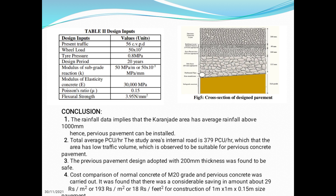These were the design inputs recorded during the case study, along with a typical cross section of the designed pavement. Conclusions from the case study: the rainfall data implies that Karanjade area has average rainfall above 1000 mm, hence pervious pavement can be installed. The study area's internal road had 379 PCU per hour, indicating low traffic volume suitable for pervious concrete pavement. The pervious pavement design adopted with 200 mm thickness was found to be safe. A cost comparison of normal M20 grade concrete and pervious concrete found a saving of approximately 29 rupees per meter square, 139 rupees per meter square, or 18 rupees per feet square for a 1m x 1m x 0.15m pavement.